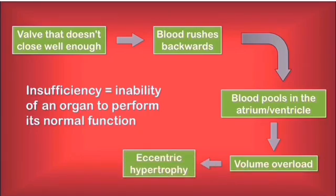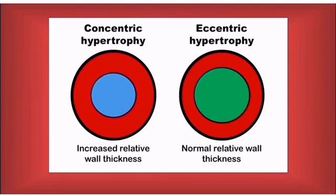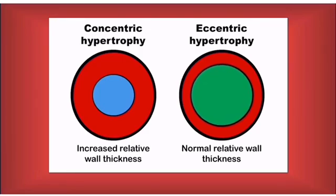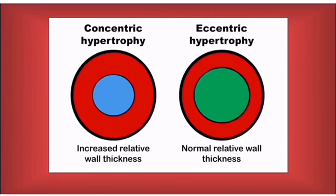The atrium or ventricle will undergo adaptive structural modifications in the form of eccentric hypertrophy. We have attached a diagram highlighting the main differences between concentric and eccentric types of hypertrophy. Concentric hypertrophy results from pressure overload and leads to increased wall thickness and reduced ventricular volume. In contrast, eccentric hypertrophy results from volume overload, which tends to stretch the myocardial fibers and dilate the respective chamber, making its wall thinner — though the hypertrophic adaptive response in the fibers partially cancels this thinning effect, resulting in a normal relative wall thickness. The ventricular volume will be larger, but the wall will maintain its relative thickness.